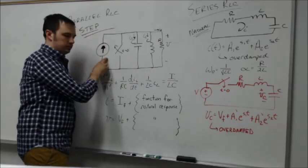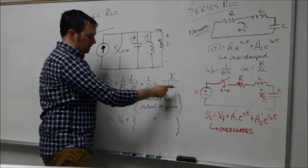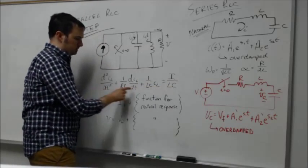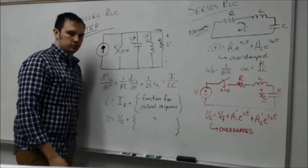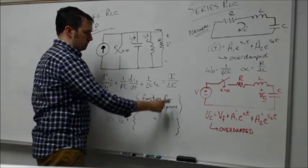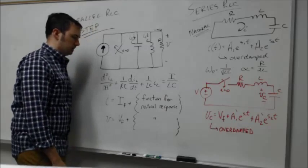The difference though is that because we have this given source sitting in our circuit, this total response on the left side of the equation now has to be equal to some constant term. Here, in this case, I over LC.